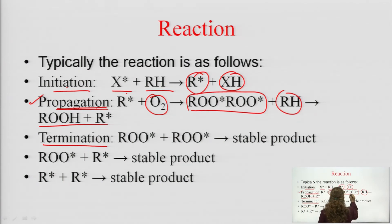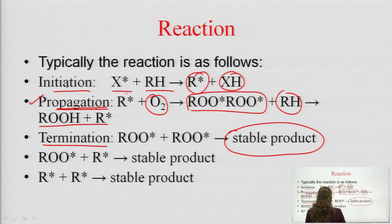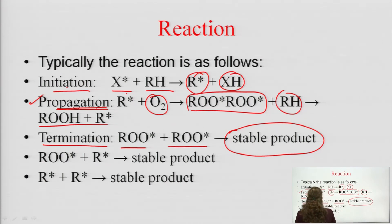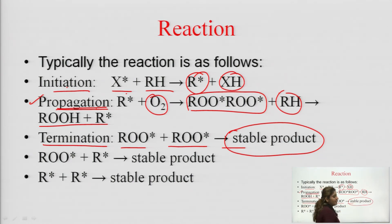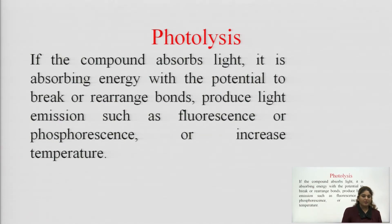After propagation comes the termination reaction. In the termination step, you have to terminate the propagated chain by forming a stable product. How do you terminate? You react the compound again with the same group so it forms a stable product and the chain is terminated. This is the oxidation process with its three different steps: initiation, propagation, and termination.